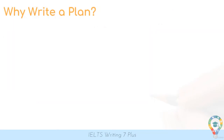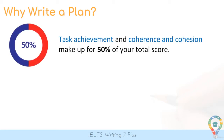Why should we write a plan in our IELTS Writing Tasks? It's really important that we consider the band descriptors and focus on task achievement and coherence and cohesion, which actually make up 50% of your total score for Task 2. Task achievement refers to answering the question, and coherence and cohesion is all about your organisation.